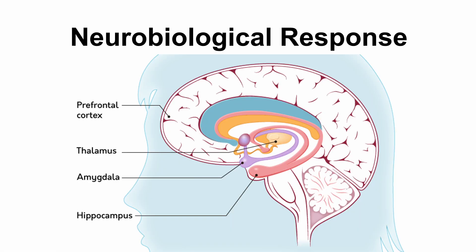We're going to talk about a couple of different parts of the brain involved in our stress response. This image here helps us visualize where these different areas are located. Our earliest stress responses begin in the amygdala. We also have involvement from our hippocampus, which helps consolidate memories relating to our stressor so we know how to react in the future. Our prefrontal cortex allows us to evaluate and make decisions, and the thalamus is right in the middle. We'll get those areas in a bit more detail.